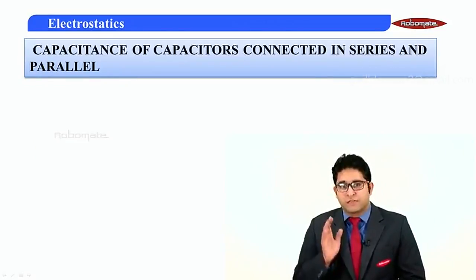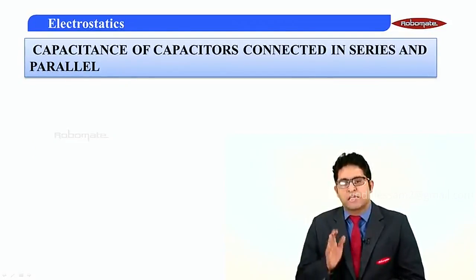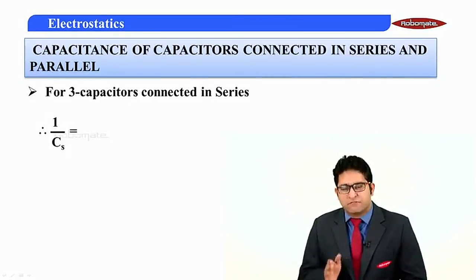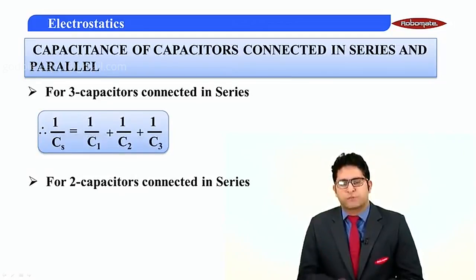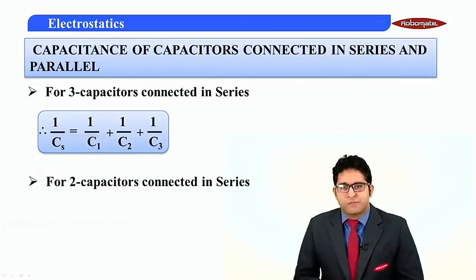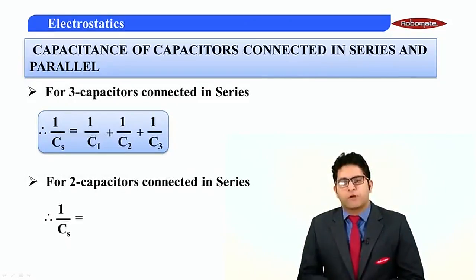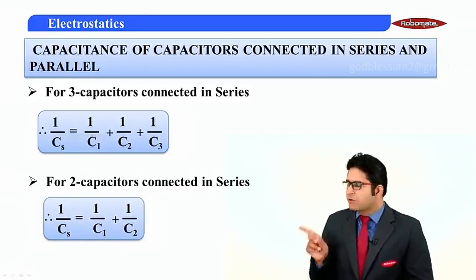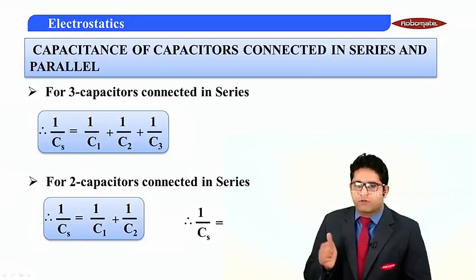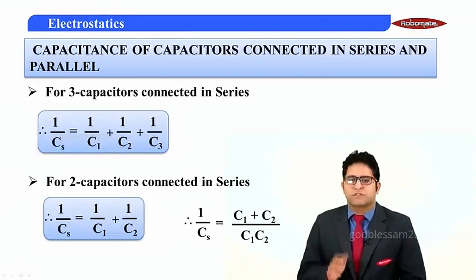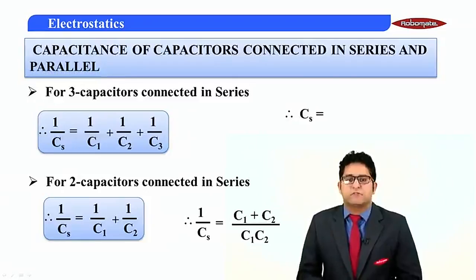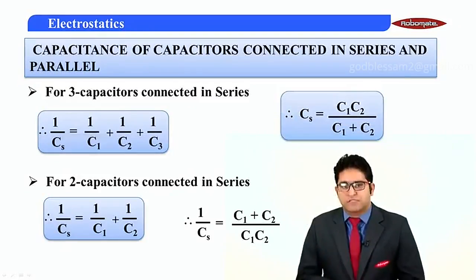In the previous modules, if we have 3 capacitors connected in series, the equivalent capacitance is given by 1/Cs = 1/C1 + 1/C2 + 1/C3. Similarly, for 2 capacitors: 1/Cs = 1/C1 + 1/C2. Cross-multiplying this gives 1/Cs = (C1 + C2)/(C1·C2).